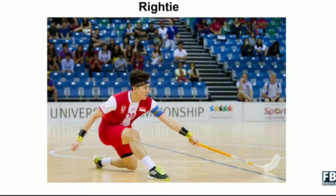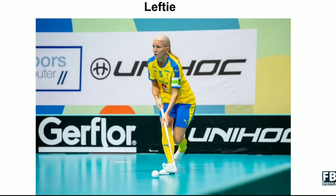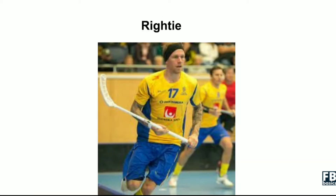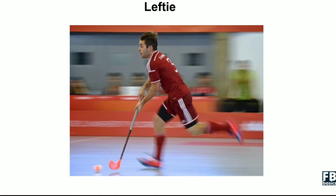These are examples for the next few slides. This is a righty — his left hand is on top of the shaft, even though he's just holding the stick in one hand at that moment. This is a lefty player — right hand on top of the shaft, whereas left hand in the middle of the shaft. This is a righty player — left hand on top of the shaft, right hand in the middle. And this is a lefty player because his right hand is on top of the shaft while his left hand is at the bottom of the shaft.